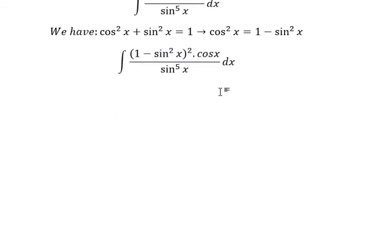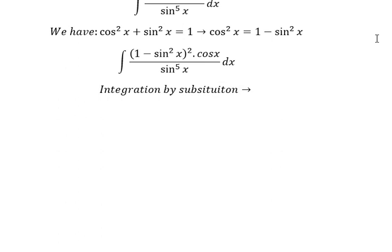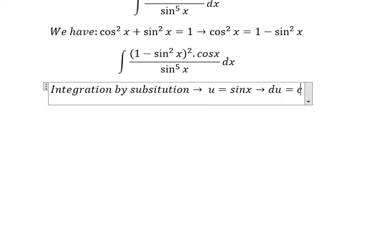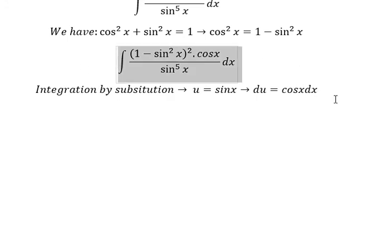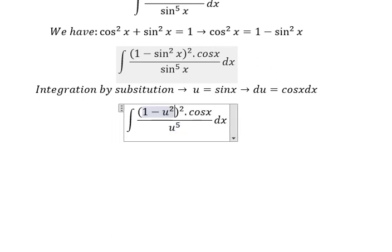Now we can use about integration by substitution. We put about u equal to sine x, du equal to cosine x dx. So this one we change to u to the power of 5, this one we change to u squared, cosine x dx we change for du.